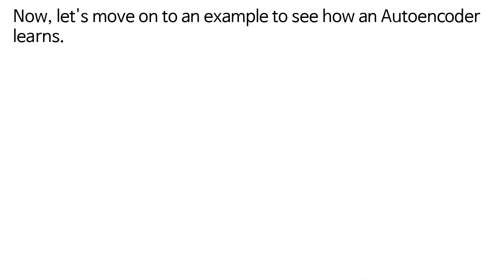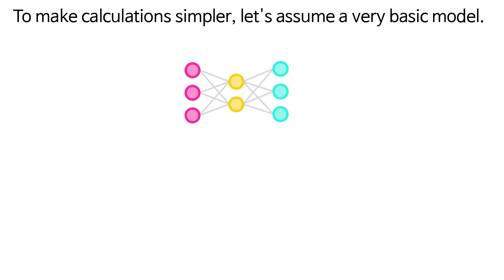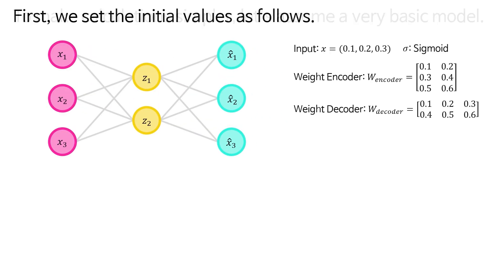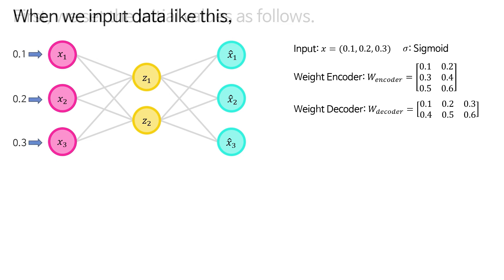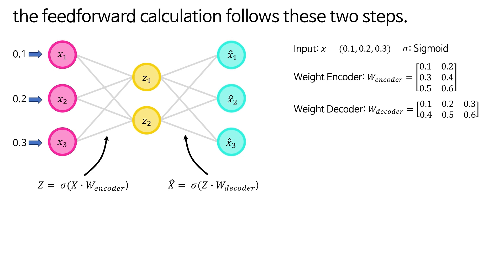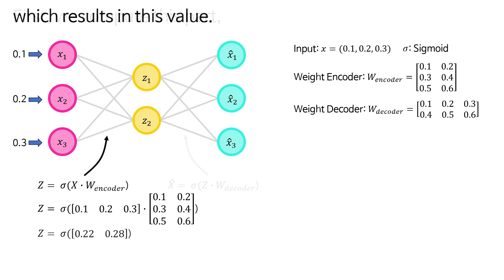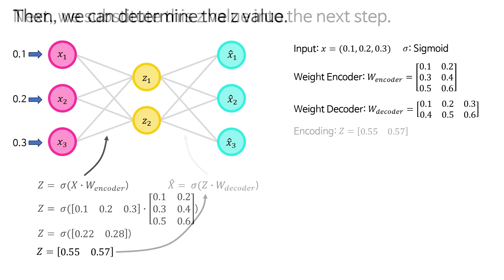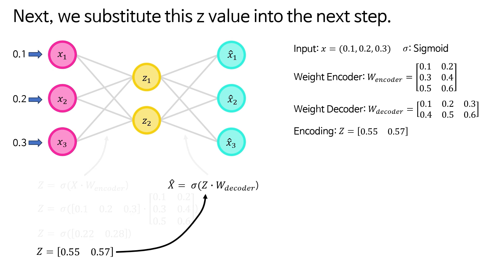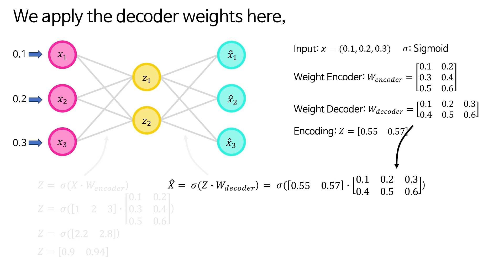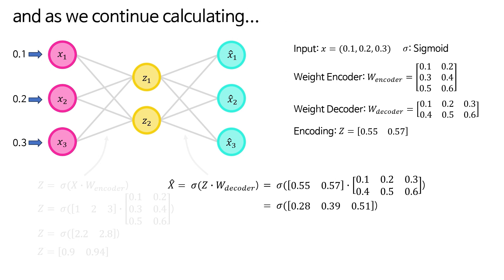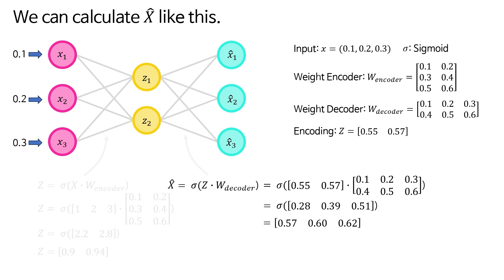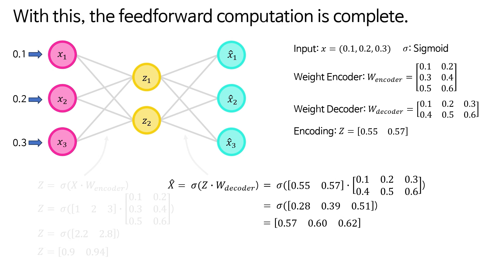Now let's move on to an example to see how an autoencoder learns. To make calculations simpler, let's assume a very basic model. First, we set the initial values. When we input data, the feed-forward calculation follows two steps. First, we compute this part, which results in a value, then we can determine the z-value. Next, we substitute this z-value into the next step, apply the decoder weights, and calculate x-hat. With this, the feed-forward computation is complete.